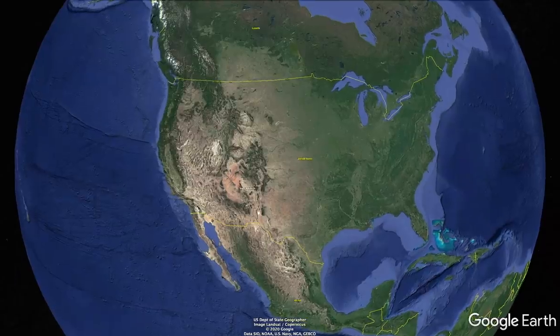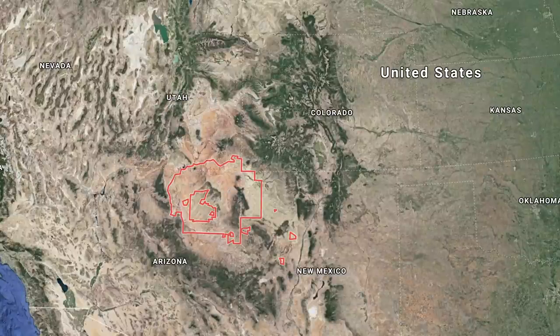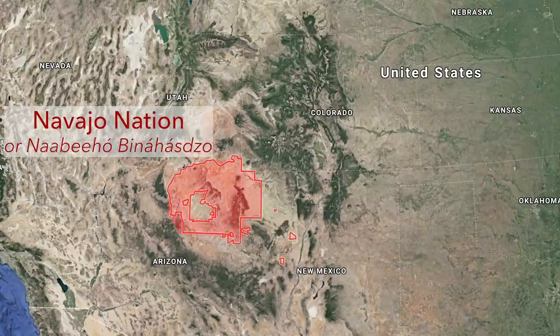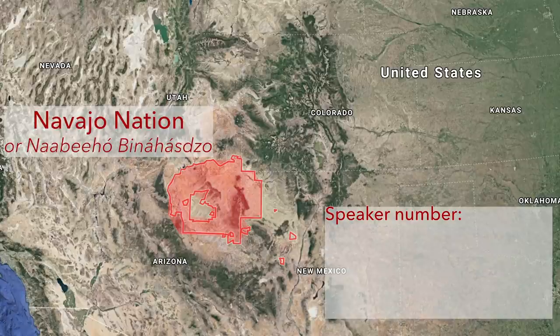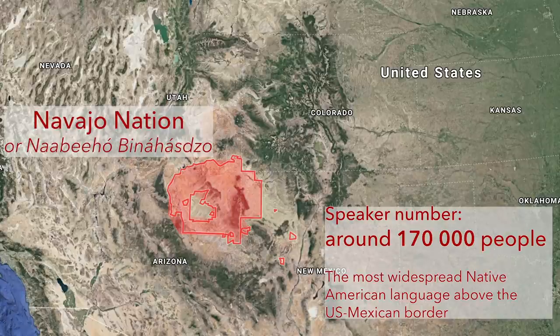I have to admit it — Navajo was so far the most difficult language I've researched, because it is so different from anything else. It is spoken in North America, in the southwest of the U.S., especially in the Navajo Nation, which is a reservation occupying portions of Arizona, Utah, and New Mexico. The number of speakers counts around 170,000 people, and it is the most widespread Native American language above the U.S.-Mexican border. How did this language end up where it is today? Let's discuss it in the history section.